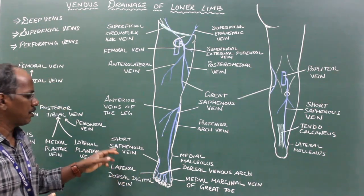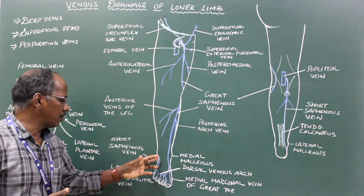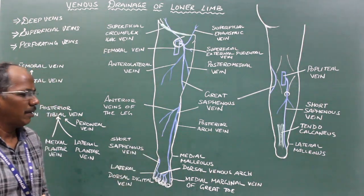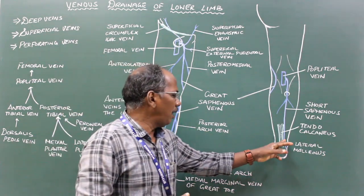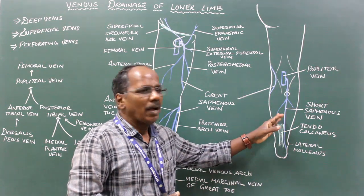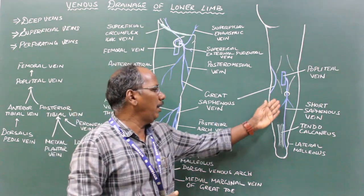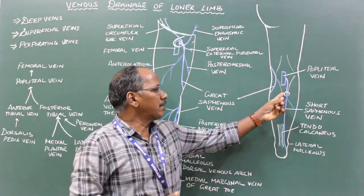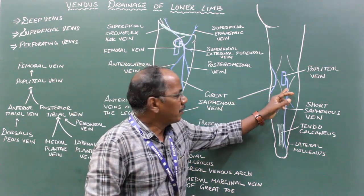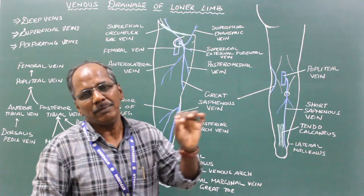These two vessels form the short saphenous vein. It runs behind the lateral malleolus and ascends along the lateral margin of the tendocalcaneus. It then runs on the middle of the posterior aspect of the leg, where it pierces the deep fascia and undergoes a small subfascial course between the two heads of gastrocnemius.